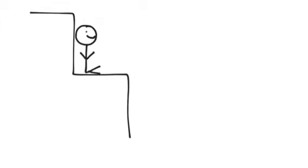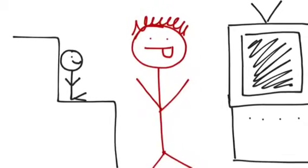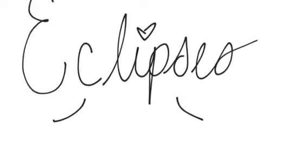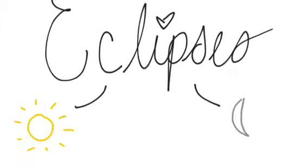It is when one object gets in between you and another object and blocks your view. An example would be when you are watching TV and your brother comes and stands right in front of you so you can't see anything. Like tides, there are two main types of eclipses: the solar and the lunar eclipse.